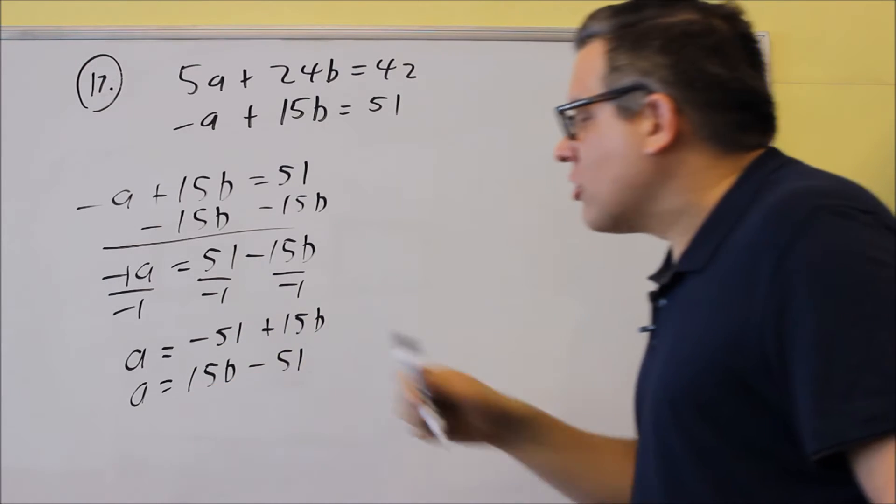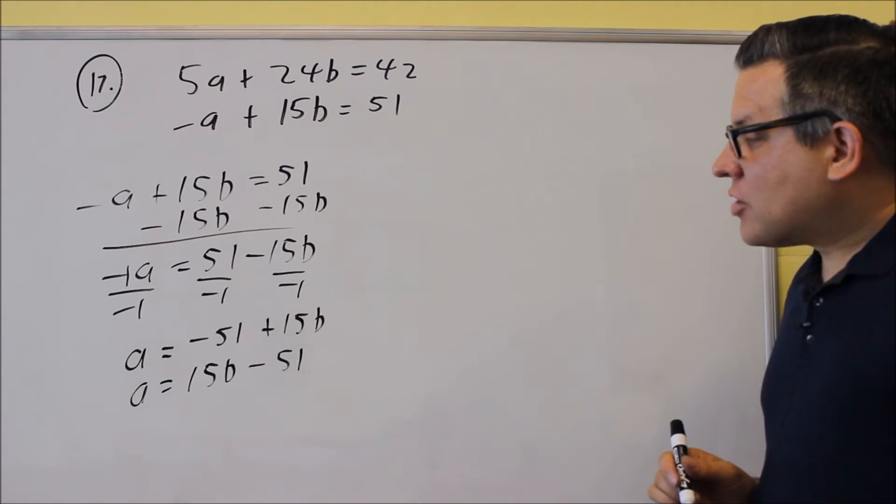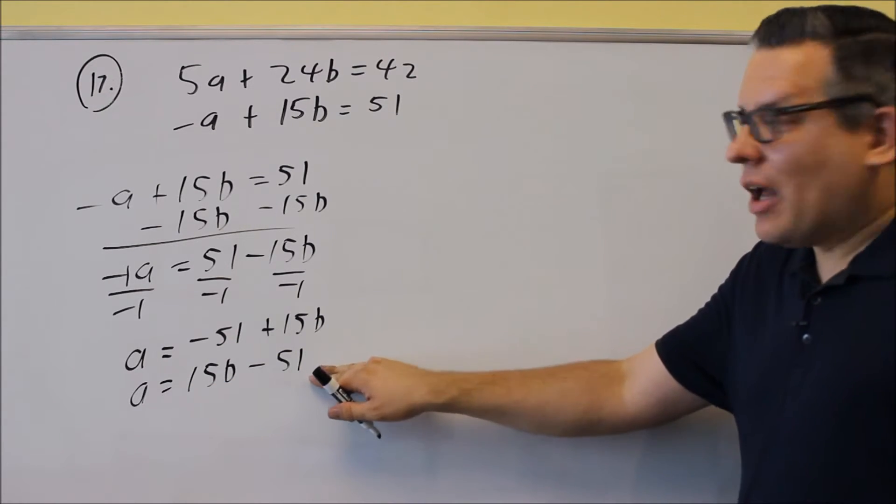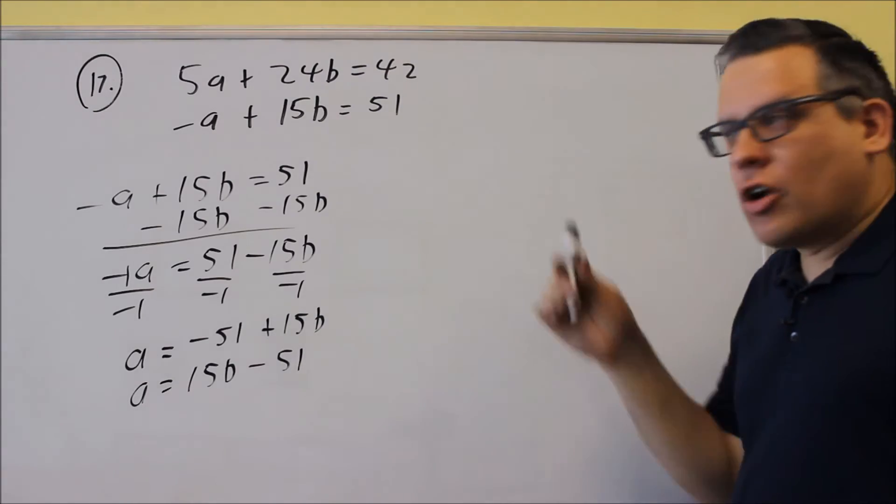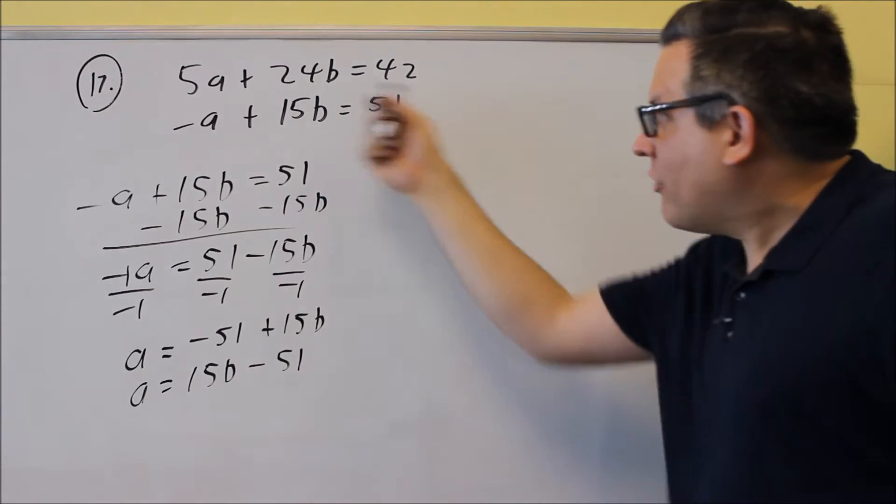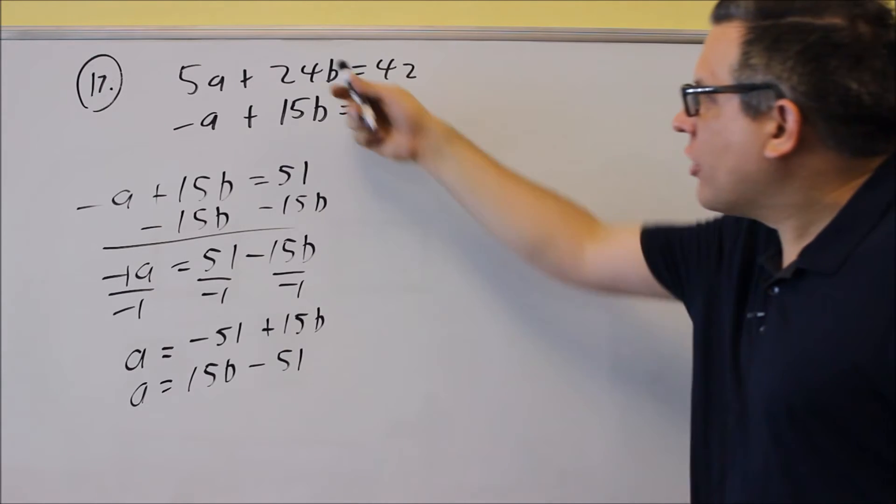Okay, but I'm going to go ahead and use the second version here, 15b minus 51. I'm going to take this, I want to put it into the first equation. Now, you don't want to put it in the second equation, the one you just worked with because then everything's all going to cancel out. You want to use the other equation.